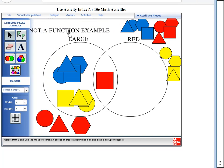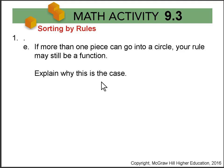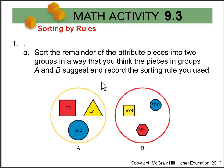So that means this rule is not a function because this red piece has the large output and the red output. It's not exactly one output. In contrast, if more than one piece can go into a circle, your rule may still be a function. Explain why this is the case. Think about our first picture and all the function rules you've defined. Why is it okay for there to be more than one piece in each circle?